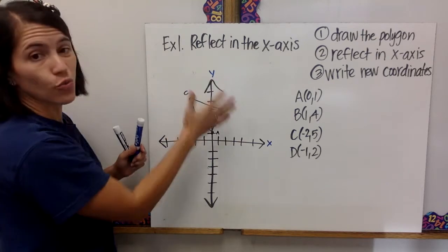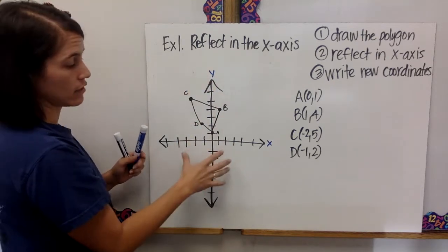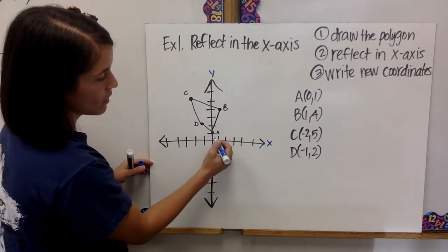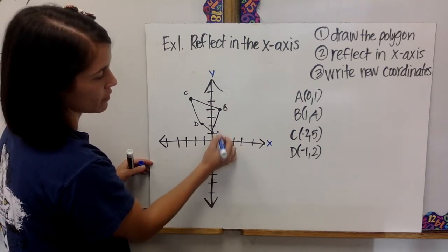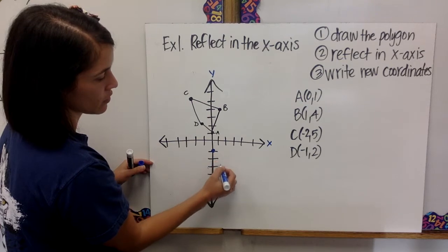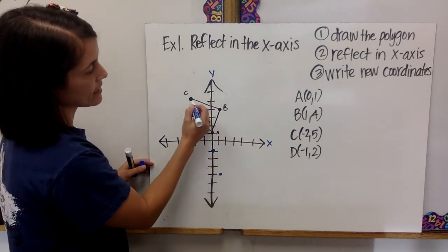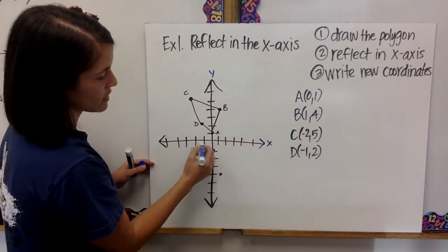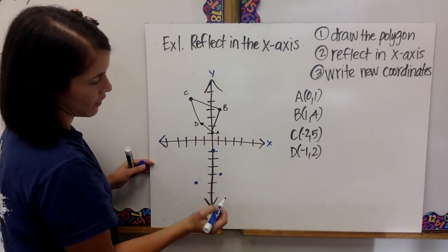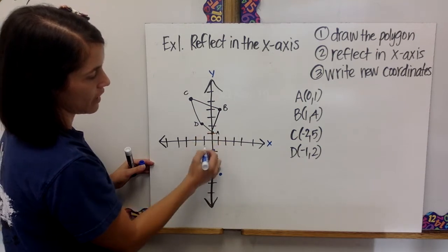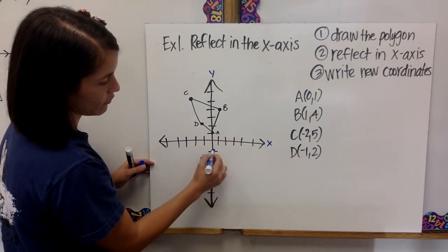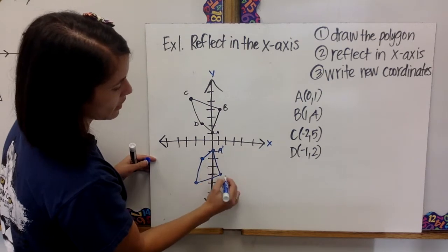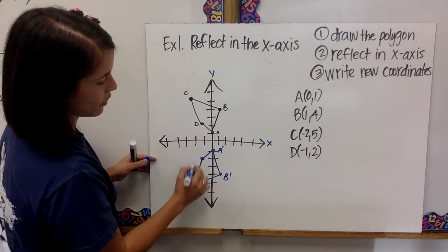Every point is going to drop down vertically. So A stays on 0 — instead of going up 1, it's going to go down 1. B is still going to go over 1, but now instead of going up 4, it's going to go down 4. C is going to go over negative 2, but instead of going up 5, it's going to go down 5. And D is going to go over negative 1 and down 2. I have reflected it and I'm drawing my new polygon, labeling them A prime, B prime, C prime, and D prime.